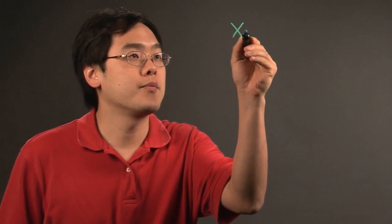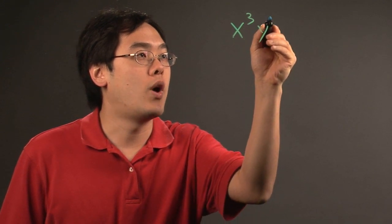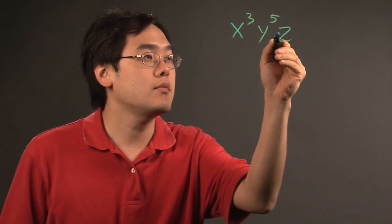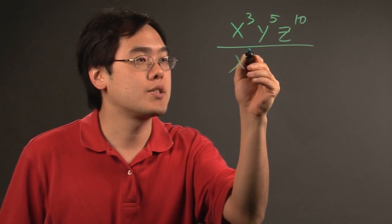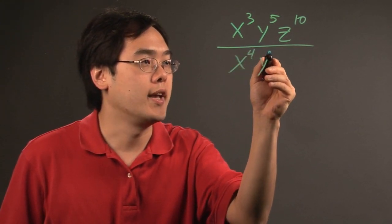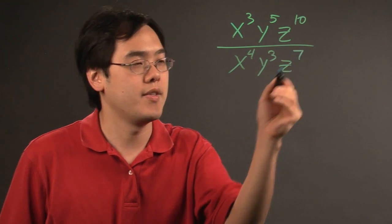So let's do an illustration and you'll see what I mean. Suppose you have x cubed, y to the fifth, z to the tenth, over x to the fourth, y cubed, z to the seventh.